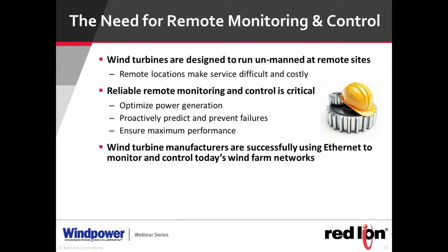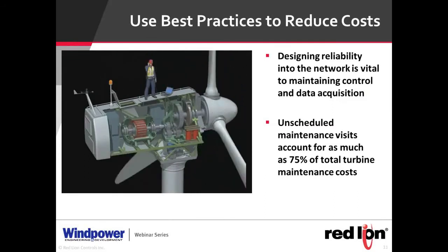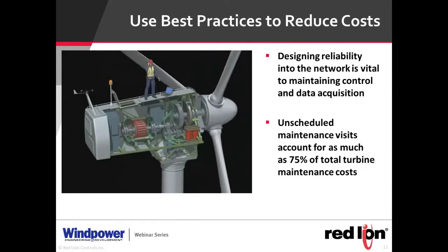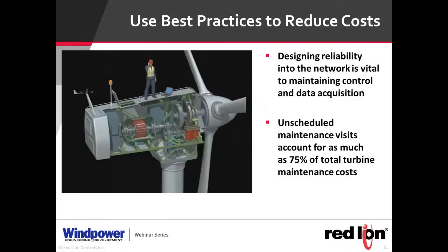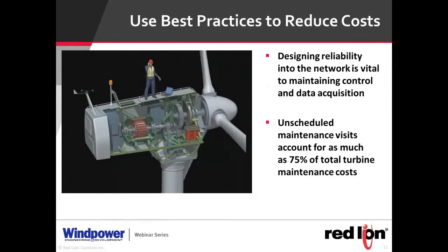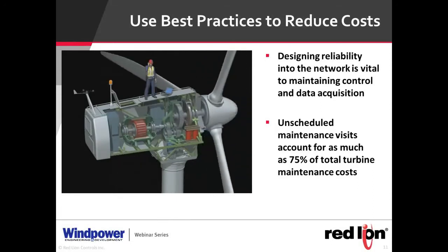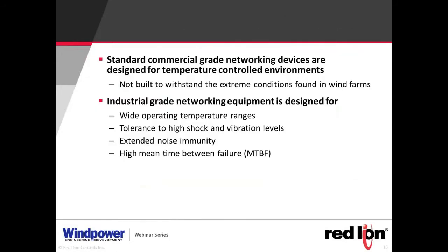Turbine manufacturers have really embraced Ethernet as the vehicle to pass data back to the monitoring station. So we want to talk about what you should look for as you're building these networks. Why is design reliability in the network so important? Unscheduled maintenance visits account for as much as 75 percent of total turbine maintenance cost. If you suddenly have to bring a technician out to these remote sites, it's very expensive to schedule the time, and parts won't necessarily be there.